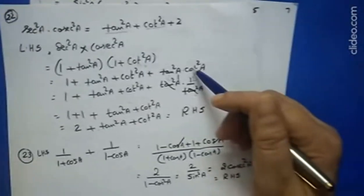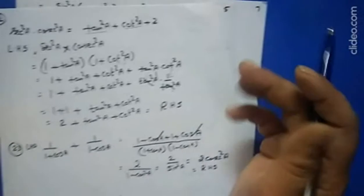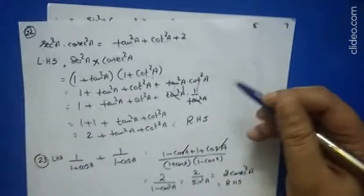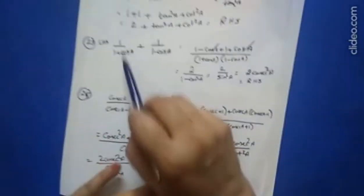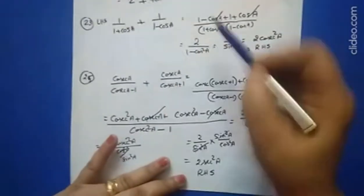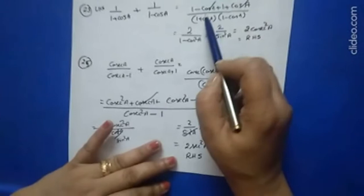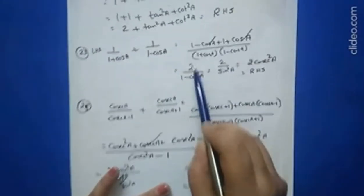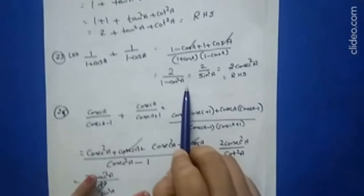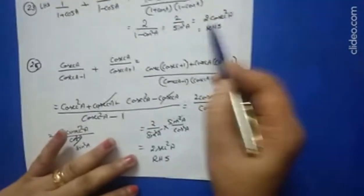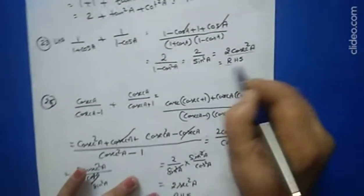Within a minute you can solve one question — it carries 3 marks. If you know the identities thoroughly you can do it quickly. Question 23: 1/(1 + cos a) + 1/(1 − cos a). Take LCM: (1 − cos a + 1 + cos a)/((1 + cos a)(1 − cos a)). The cos a terms cancel, giving 2/(1 − cos²a). Since 1 − cos²a = sin²a, you get 2/sin²a = 2cosec²a, which is the right hand side.